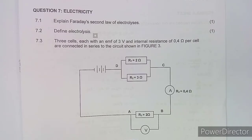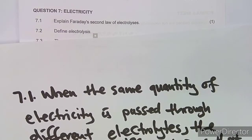We have the first question, which is question number seven on electricity, where we are given: 7.1 - explain Faraday's Second Law of Electrolysis, and 7.2 - define electrolysis. I come with some definitions and ways of answering these.